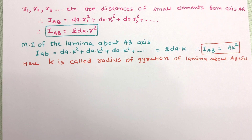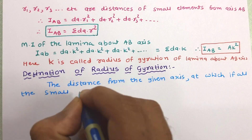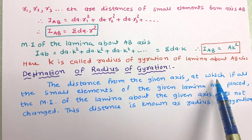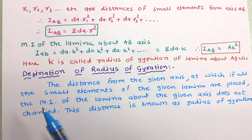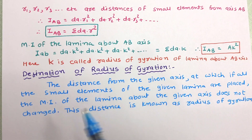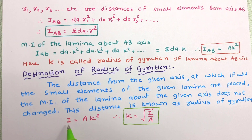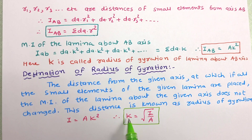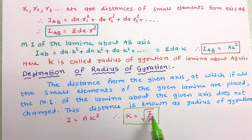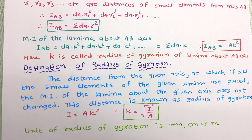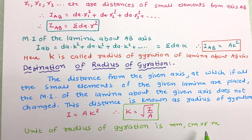Now let us define radius of gyration. The distance from the given axis at which, if all the small elements of the given lamina are placed, the moment of inertia of the lamina about the given axis does not change — this distance is known as the radius of gyration. Here moment of inertia I is equal to A times K square, where K is the radius of gyration. So K is equal to the square root of I divided by A. This is the equation to determine the radius of gyration. As the radius of gyration is a distance, its unit is millimeter, centimeter, or meter.